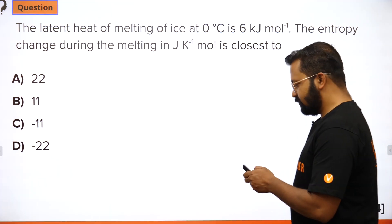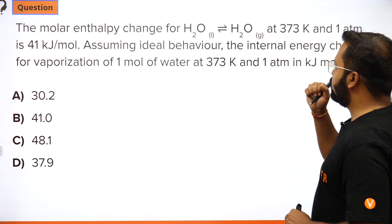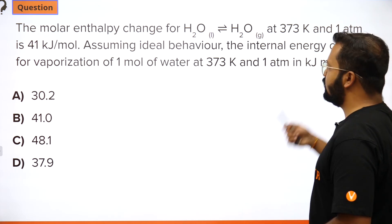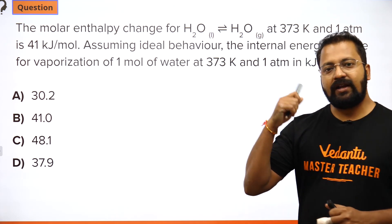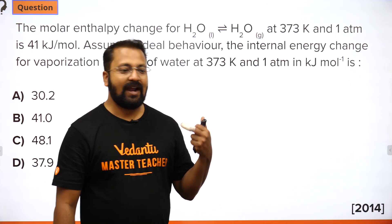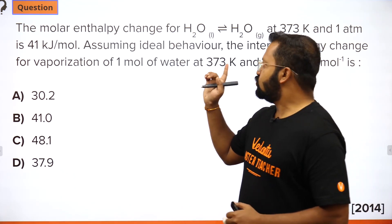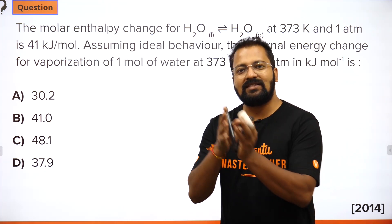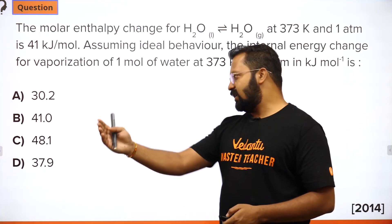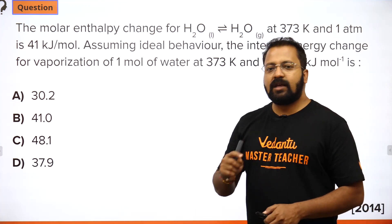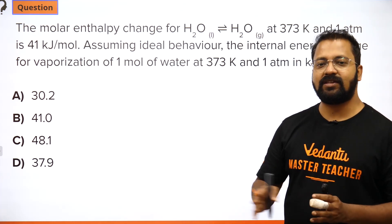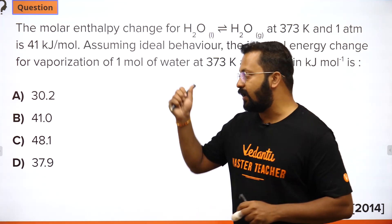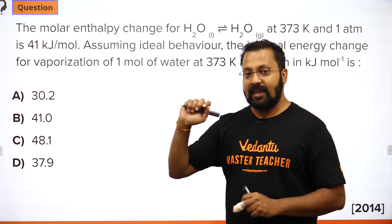Next question: the molar enthalpy change for H₂O(l) → H₂O(g) at 1 atm is 41 kJ/mol. Find the internal energy change for vaporization of 1 mol of water. Take this as homework — we just solved a similar question using ΔH = ΔU + ΔnRT. Note: this type of question has appeared in both 2014 and 2011 KVPY papers. If you solve questions from the last six or seven years using the same formulas and go prepared, you will be able to ace KVPY.